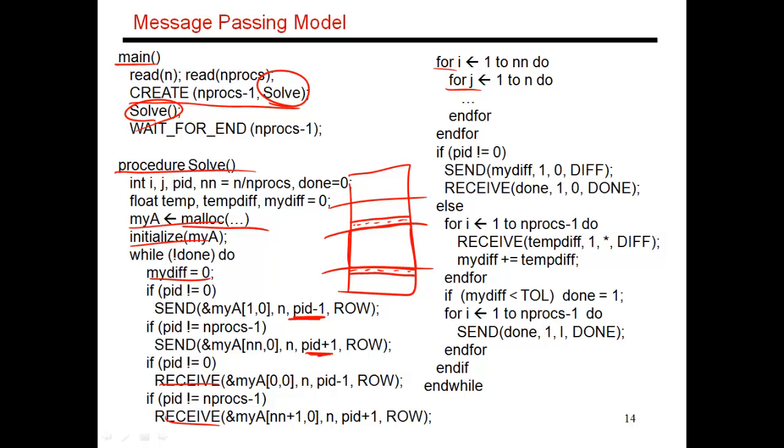So PID 0 is responsible for aggregating these diffs. So if I'm PID equals 0, then I get into this else part, and I receive everybody's mydiffs. And I receive it into a variable called tempdiff, and I increment that tempdiff to my own mydiff.